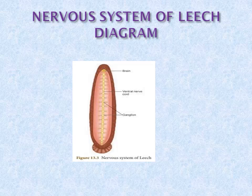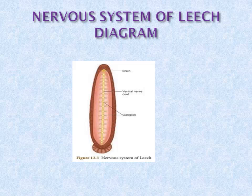The brain is extended as a ventral nerve cord. It is present from the brain to the posterior sucker. In each and every segment there is a ganglion, and from that ganglion nerves are projected out.